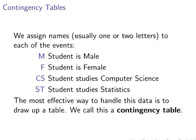CS means the student studies computer science, and ST means the student studies statistics. We usually go for a very short name for the event — one or two letters — as long as it makes sense. Just try to avoid names that could cause confusion.